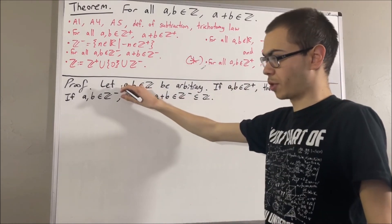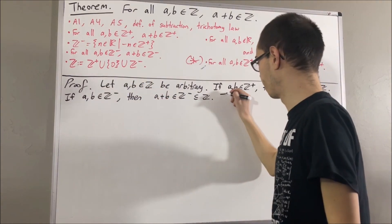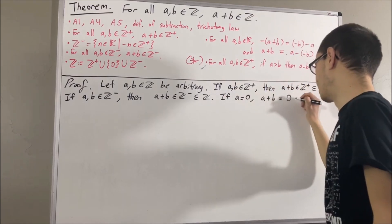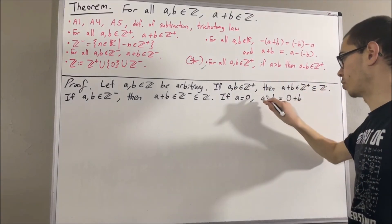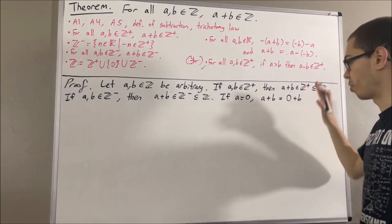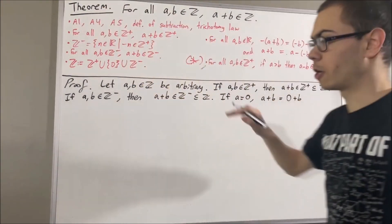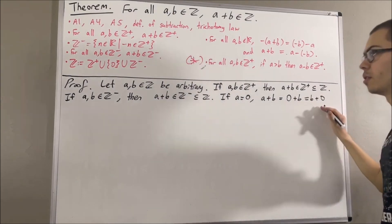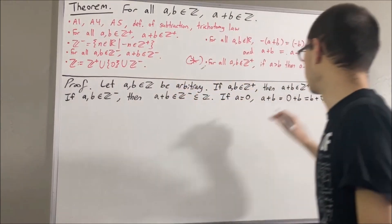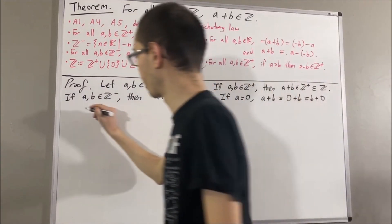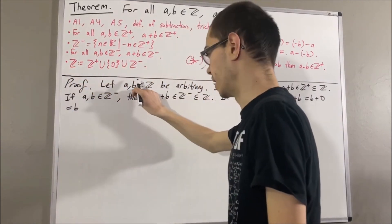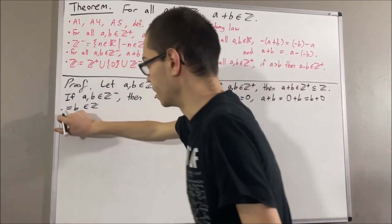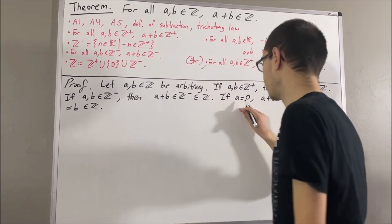Another possibility is that a is equal to zero. If a is equal to zero, then a plus b equals zero plus b. By axiom 1, the commutative law, zero plus b equals b plus zero. By axiom 4, b plus zero equals b. And b by assumption is an integer, so a plus b is an integer.